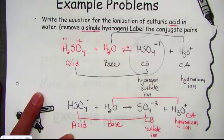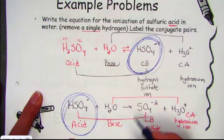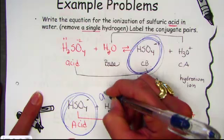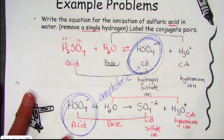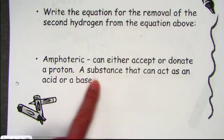Notice what we've done: in one scenario, hydrogen sulfate was a conjugate base, and here hydrogen sulfate was an acid. In one situation it behaved as a base and in another as an acid — this is amphoteric. A substance that in one condition was behaving as a base and yet in another situation acted as an acid. Water can be amphoteric, and so can many other compounds. Amphoteric: a substance that can either accept or donate a proton, acting as an acid or a base depending upon the Bronsted-Lowry chemistry.